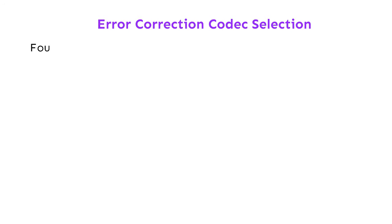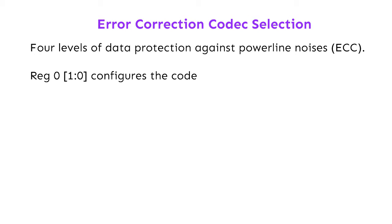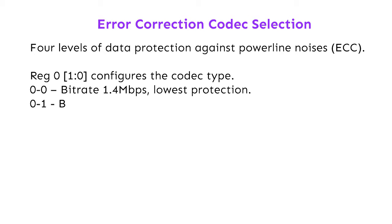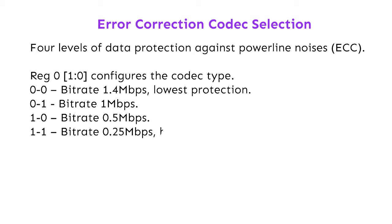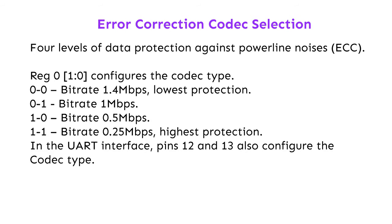Error correction codec selection: four levels of data protection against powerline noises (ECC). Reg 0 bits 0 and 1 configure the codec type: 0-0 gives bitrate 1.4 Mbps (lowest protection); 0-1 gives 1 Mbps; 1-0 gives 0.5 Mbps; 1-1 gives 0.25 Mbps (highest protection). In the UART interface, pins 12 and 13 also configure the codec type.